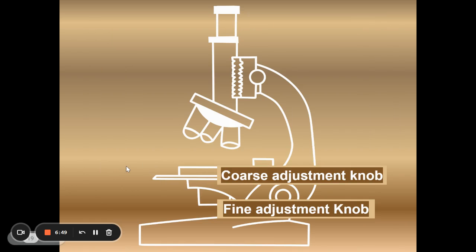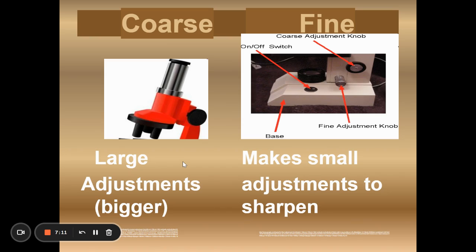Then to the knobs, the coarse adjustment and the fine adjustment knob. Now in this model from our picture that we have in our notes, both of the knobs are together in one spot. That's pretty common. The coarse adjustment knob is the bigger one. And the fine adjustment is the smaller one set inside of the coarse adjustment knob. Now sometimes they're separate as you can see in the picture to the right. The coarse adjustment knob being the larger one and the fine adjustment knob is always the smaller one.